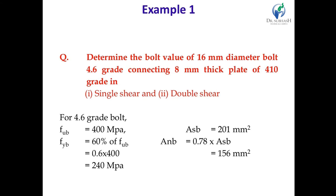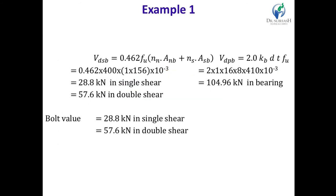Now starting with our first example. Determine the bolt value of a 16 mm diameter bolt, 4.6 grade, connecting an 8 mm thick plate of 410 grade in single shear and double shear. First, according to the grade of bolt, we decide FUB and FYB — the ultimate strength and yield strength. For grade 4.6: FUB = 400 MPa and FYB = 240 MPa (60% of FUB). We then calculate ASB = pi/4 × d² = 201 mm² and ANB = 0.78 × ASB = 156 mm².